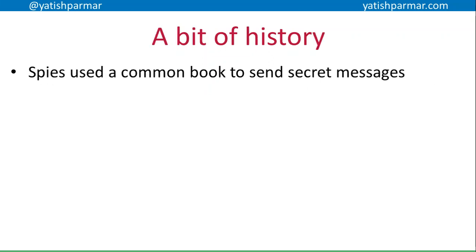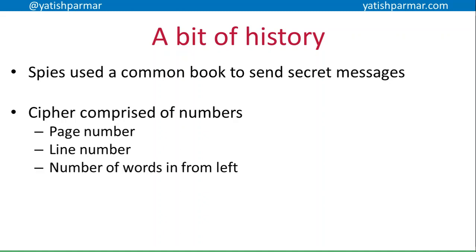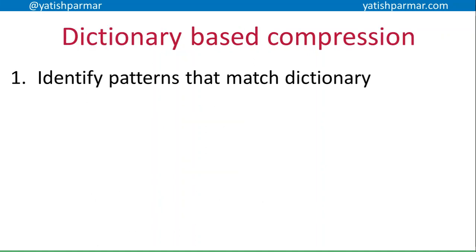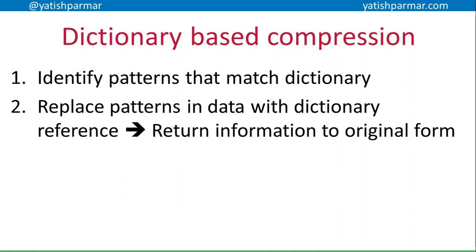A bit of history: this happened in lots of different wars where spies used a common book to send secret messages to each other. Because the two spies knew the common book they were going to use, one of them would create a cipher by generating a page number, line number, and the number of words in from left to right. Then the person at the other end would use the same book to recreate the message. And in essence, that's what dictionary-based compression is doing — you identify patterns that match the dictionary, replace the patterns in the data with dictionary references, and return the information back to its original form.